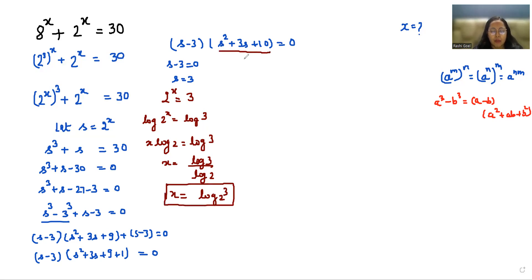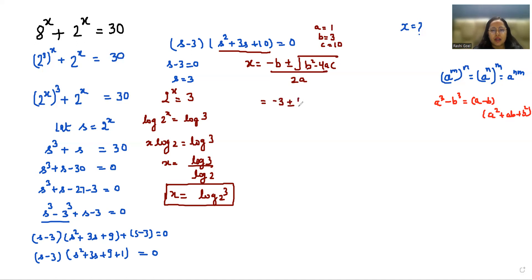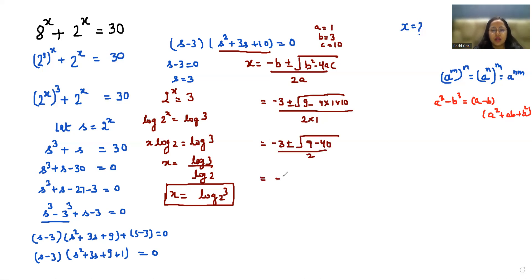Now solving the second root s² + 3s + 10 = 0 using the quadratic formula: s = (−b ± √(b² − 4ac)) / 2a, where a = 1, b = 3, c = 10. This gives s = (−3 ± √(9 − 40)) / 2 = (−3 ± √(−31)) / 2.